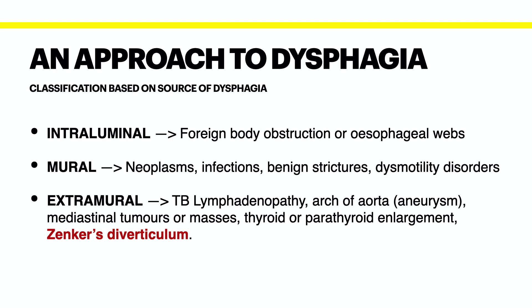Extramural sources of dysphagia involve anything outside of the structure of the esophagus pushing in on it. This can include enlarged lymph nodes due to tuberculosis in the chest, severe hepatomegaly, aneurysms in the aorta, mediastinal tumors or masses, or thyroid enlargement or parathyroid enlargement, especially causing a stricture at the start of the esophagus.